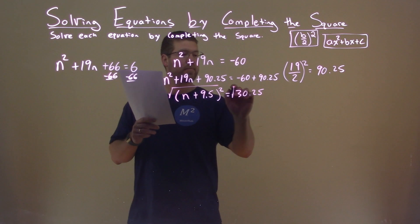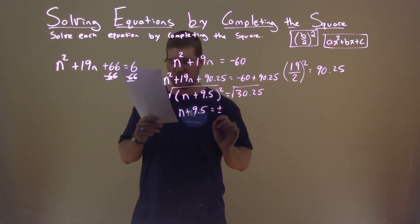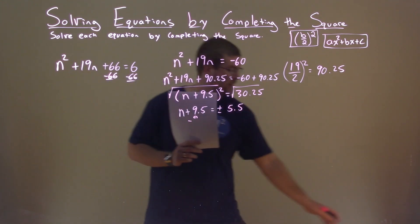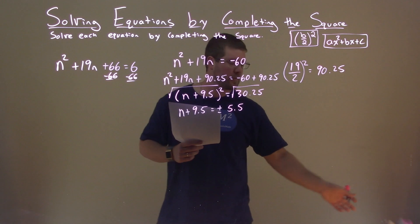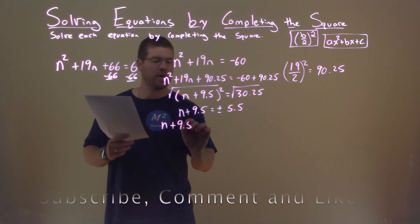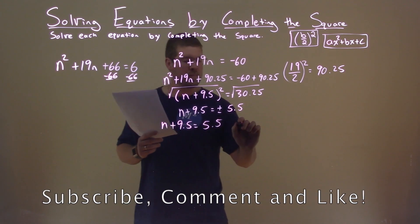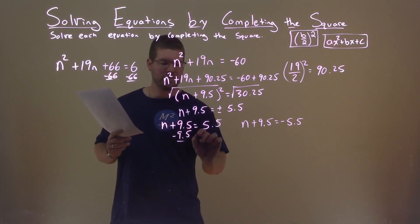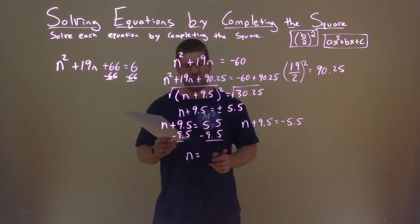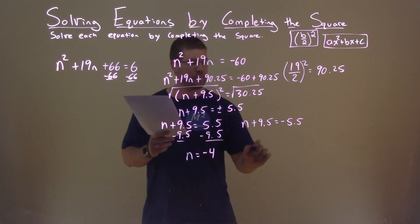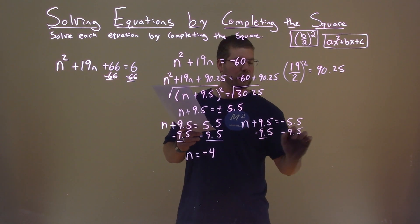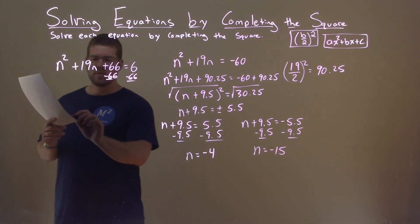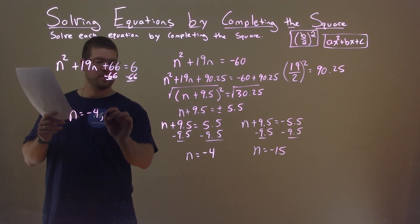Taking the square root of both sides: n plus 9.5 equals plus or minus the square root of 30.25, which comes out to be 5.5. Writing two equations: n plus 9.5 equals positive 5.5, and n plus 9.5 equals negative 5.5. Subtracting 9.5 from both sides: 5.5 minus 9.5 is negative 4. Doing it again: negative 5.5 minus 9.5 is negative 15. Our two solutions are n equals negative 4 and negative 15.